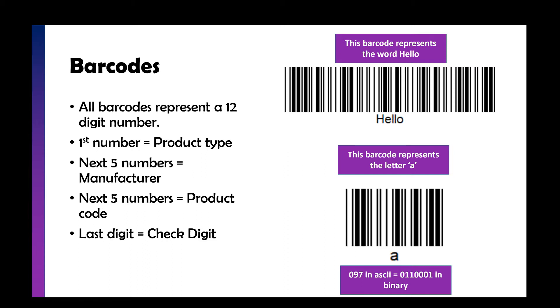So 12 digit numbers, the first number is what's called the product type. So that might be, is it food? Is it a games console? What is it? The next five numbers would be the manufacturer code. Then the next five would be the product code. And the last digit is a check digit, which we've covered in the data communication unit. So it's a way of making sure that data is correct when it's scanned in.